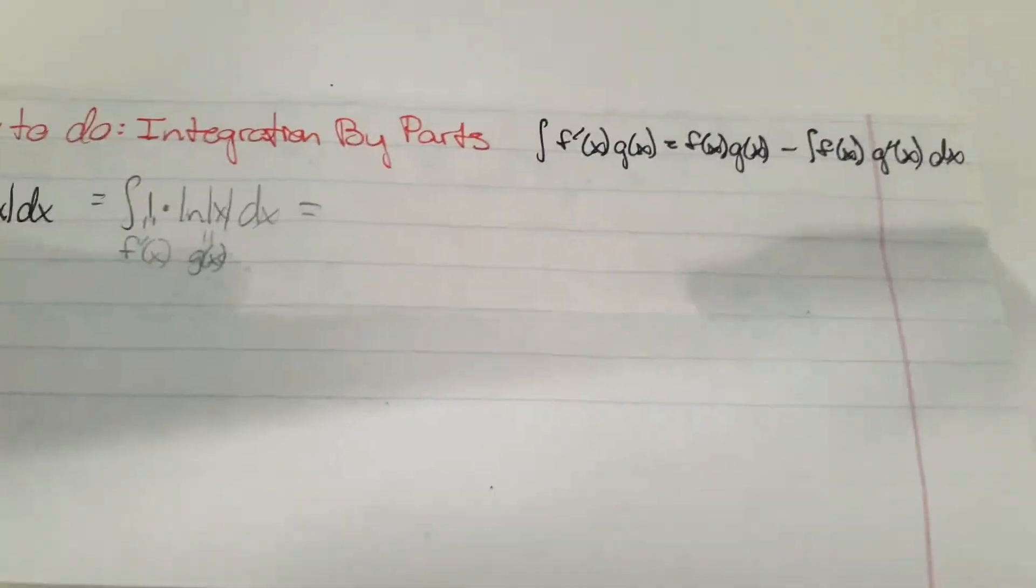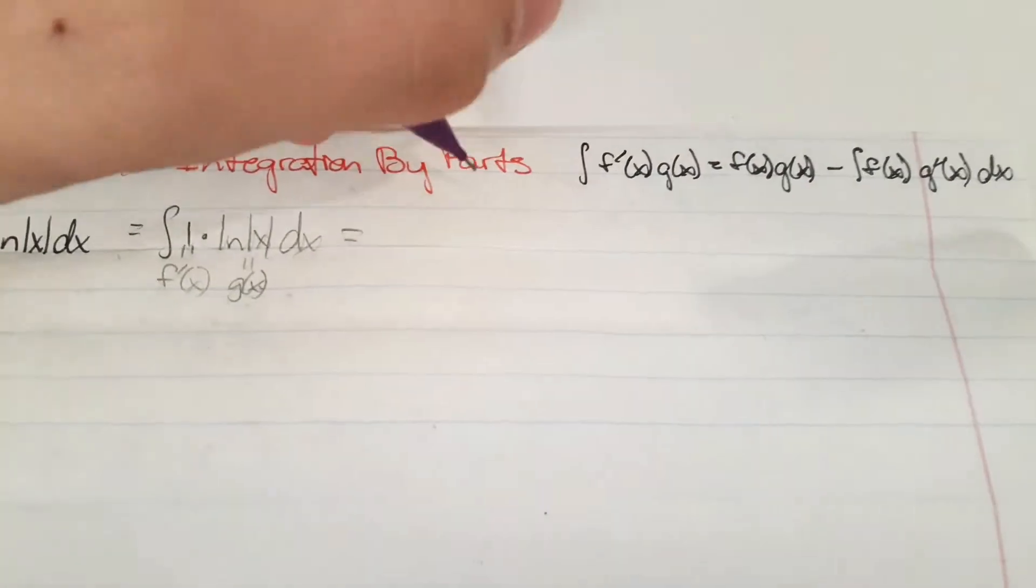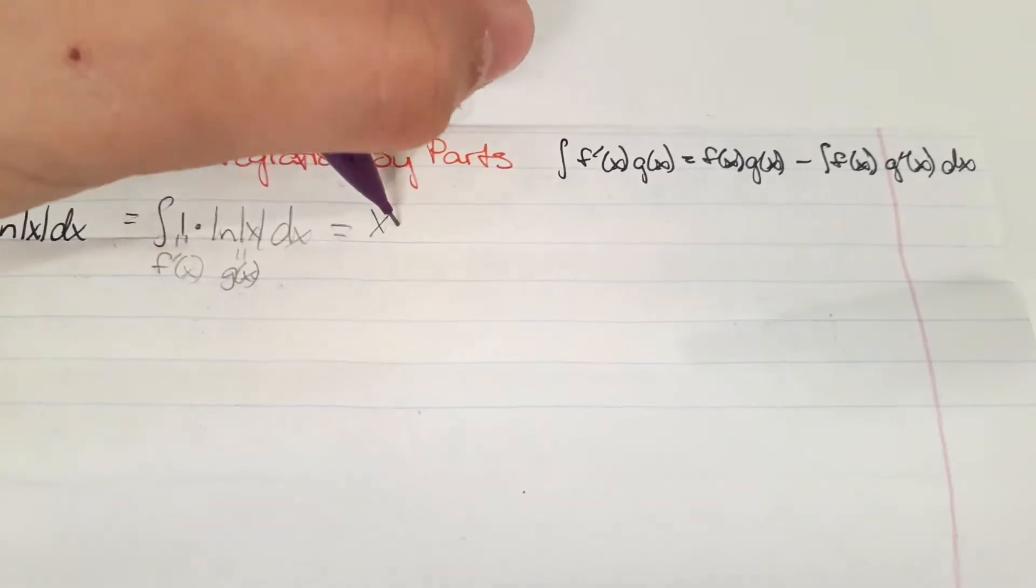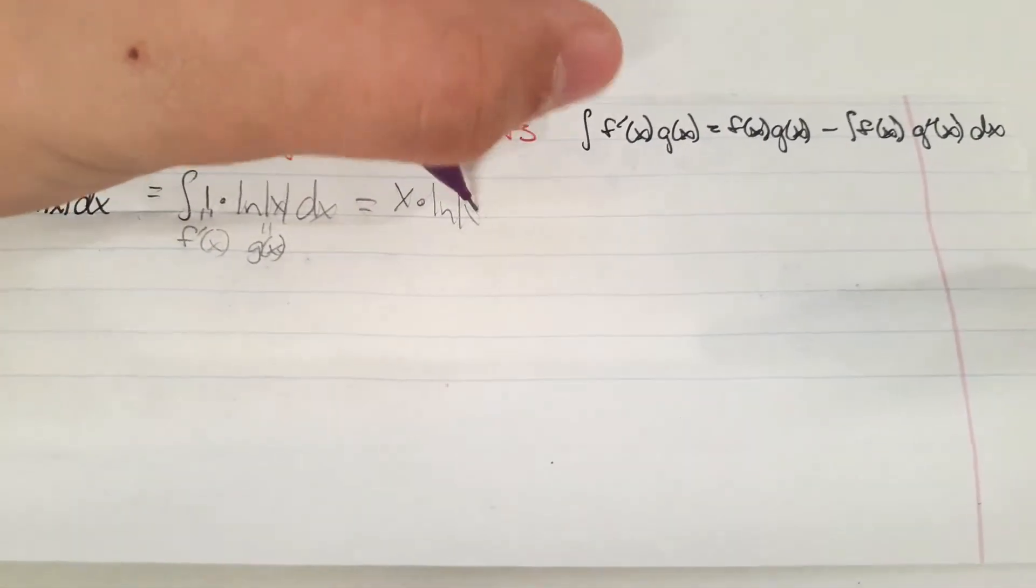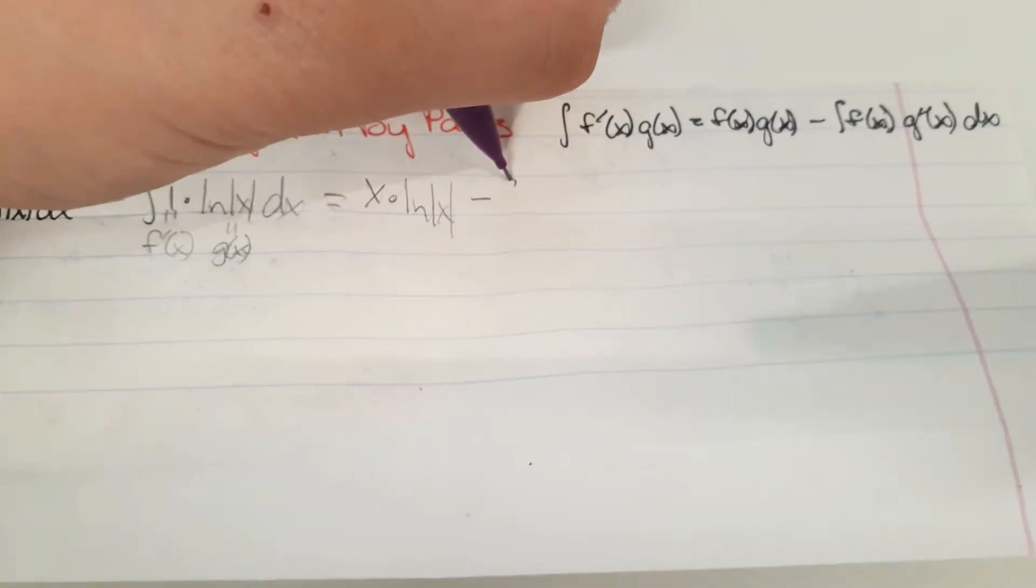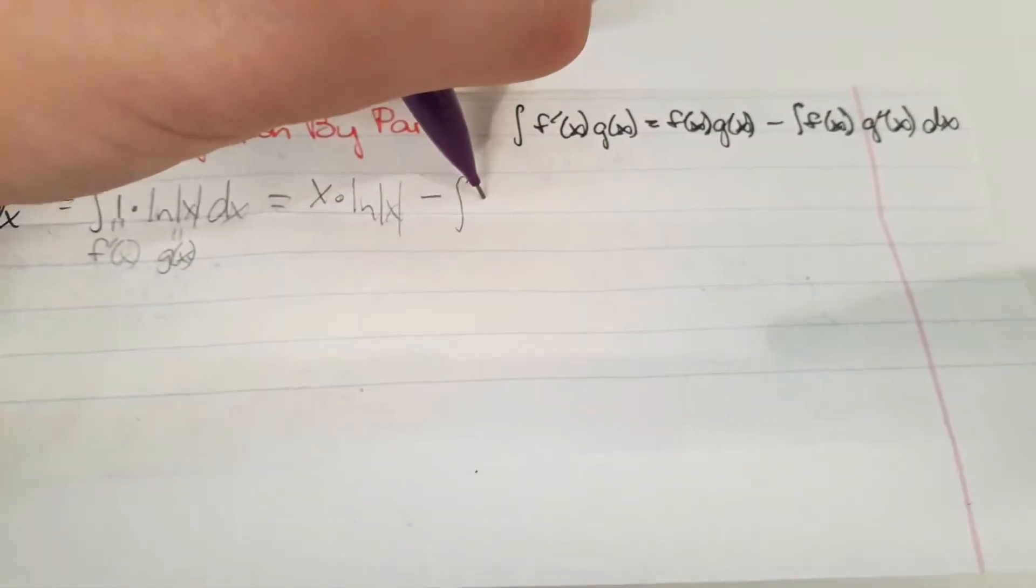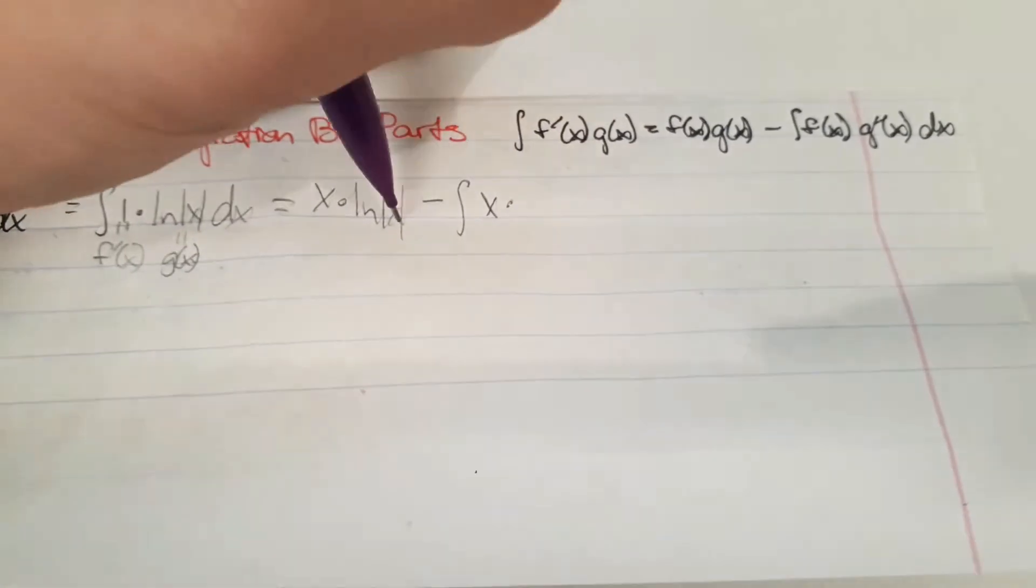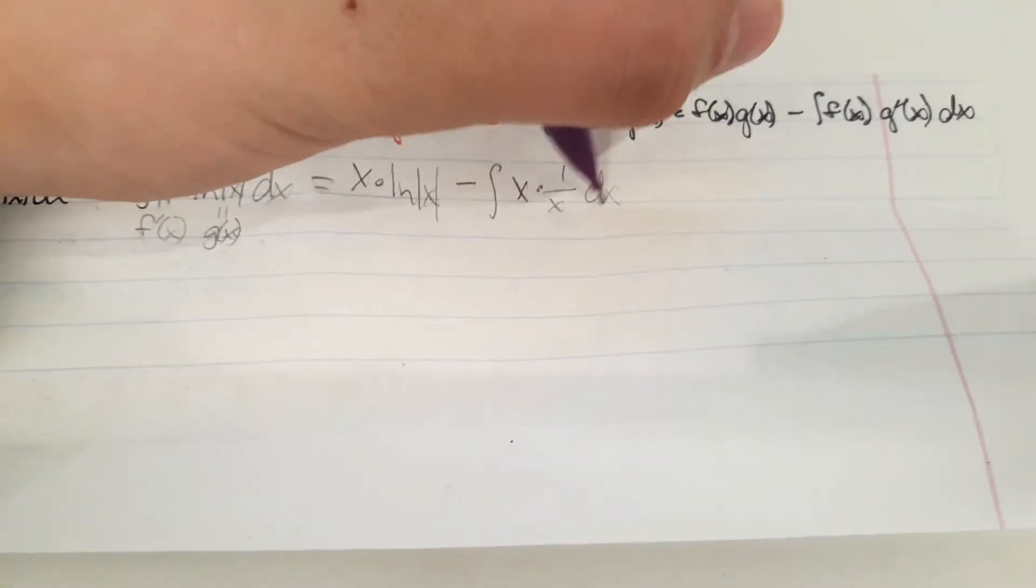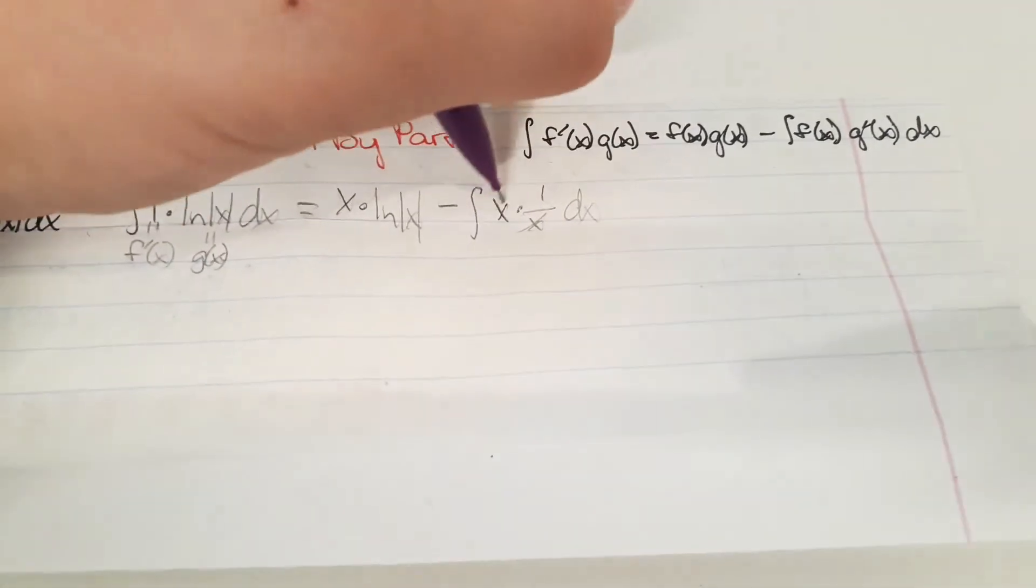All I need to do is plug it in. So it's going to be f of x g of x, that's x times ln of x, minus the integral of x times the derivative of ln of x is 1 over x dx. And these two cancel out.